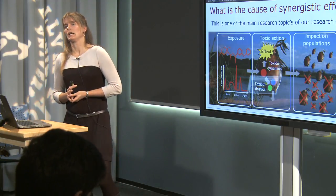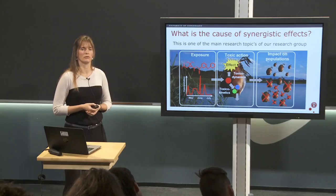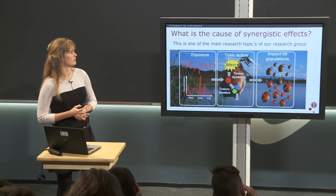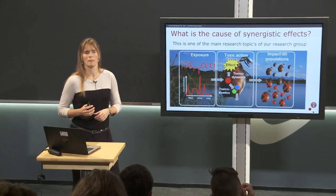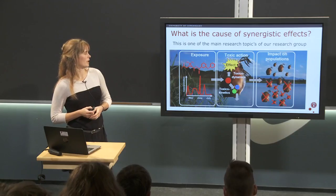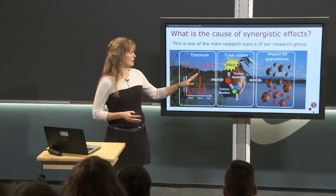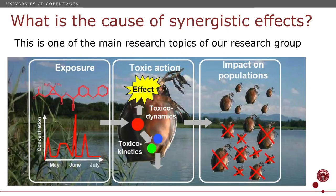Understanding the mechanisms behind these synergistic and antagonistic interactions is one of the topics in our research group. We expose our test organisms to different combinations of chemicals known to interact, and try to understand how they affect each other's uptake, metabolization, and the damage they cause — and maybe recovery. Since I work in ecotoxicology, we also work with dynamic exposures and want to see effects not just on single individuals but on populations, and to extrapolate those to environmental effects.